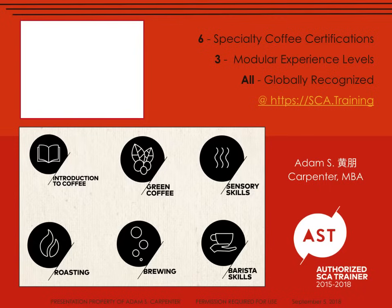My name is Adam, but I also go by the Chinese name Huang Peng, depending on which side of the globe you find me training. Since 2015, I have been an AST — that's an Authorized SCA Trainer — and part of that training involved immersion into Mandarin Chinese.